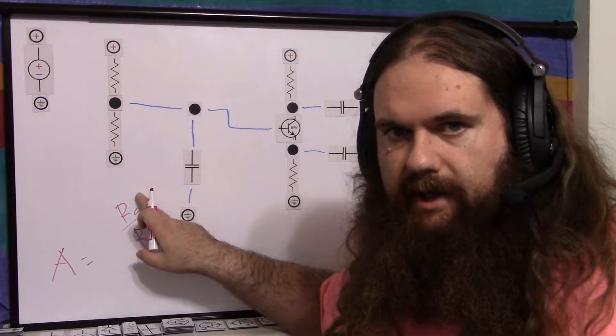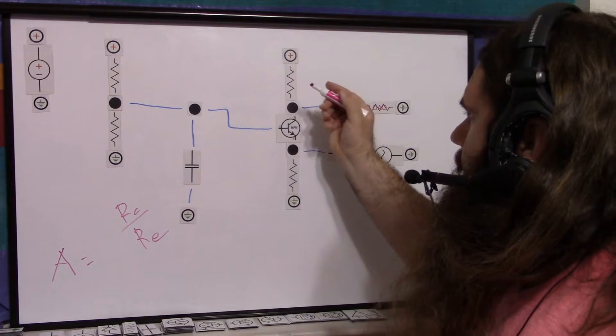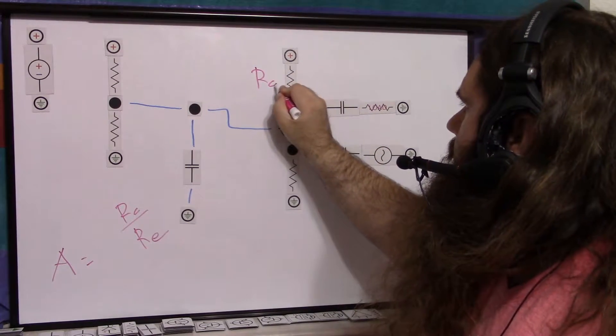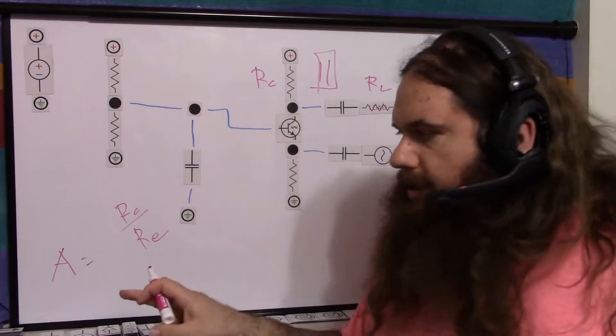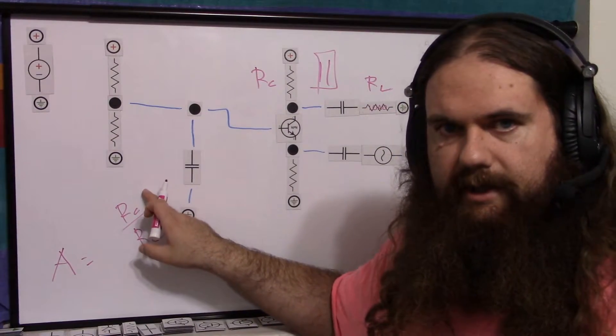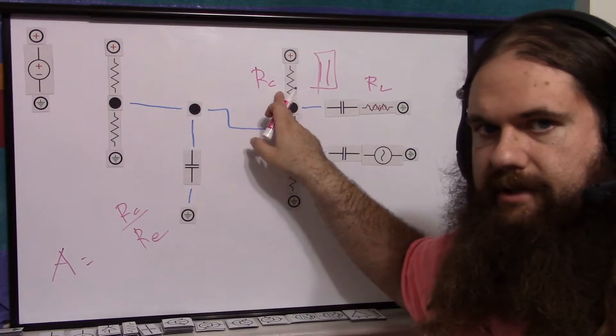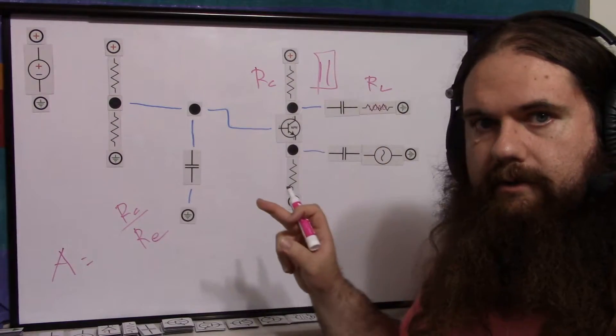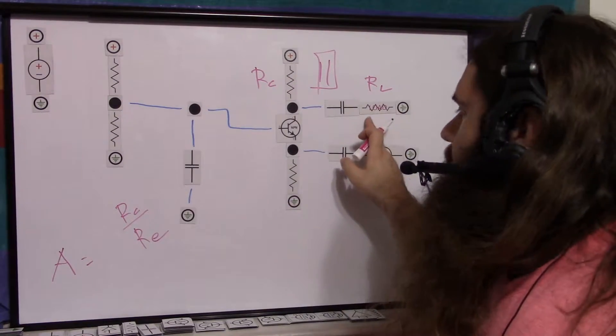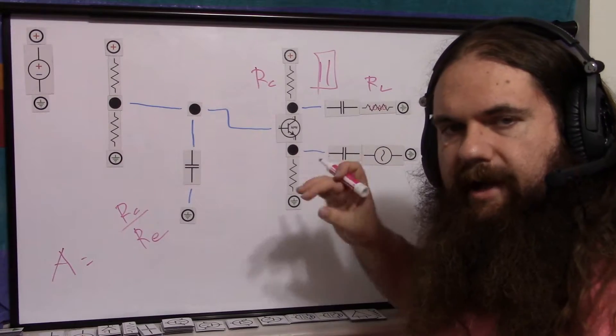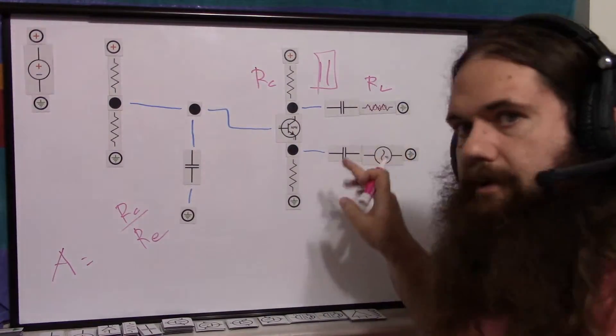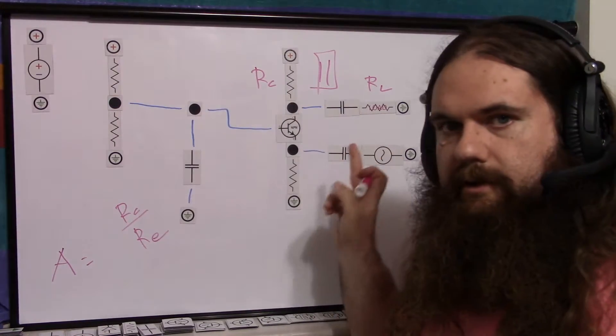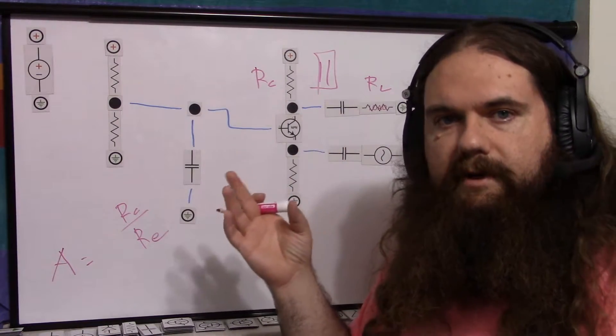Now, one thing to keep in mind for the collector is that you've got your actual RC here, but then you've got RL. And these are in parallel. So your collector resistance, your collector impedance, is not just this resistor, but also your load. So what you do is you can increase your load, and that increases the gain. Only to a point, though, if you increase load too much, because you see you have this capacitor.